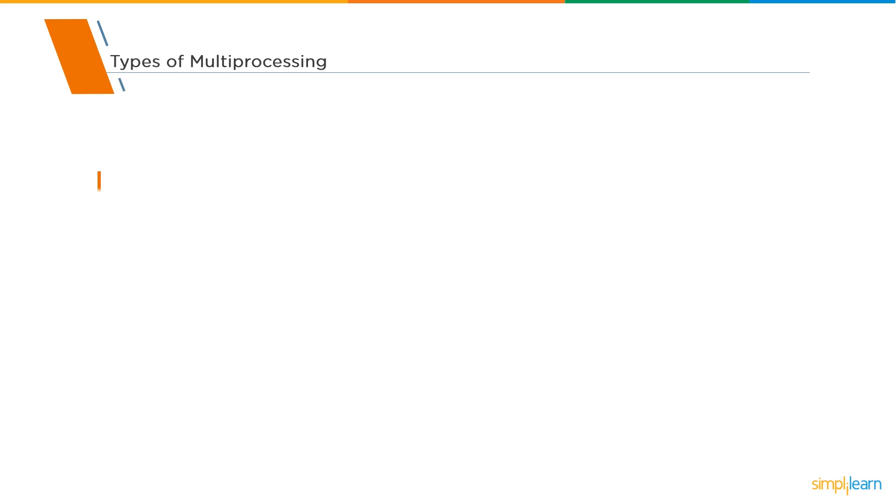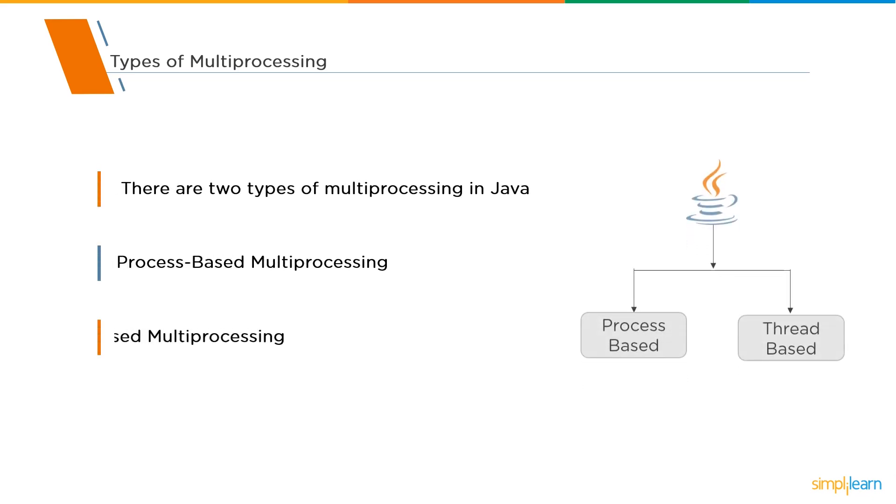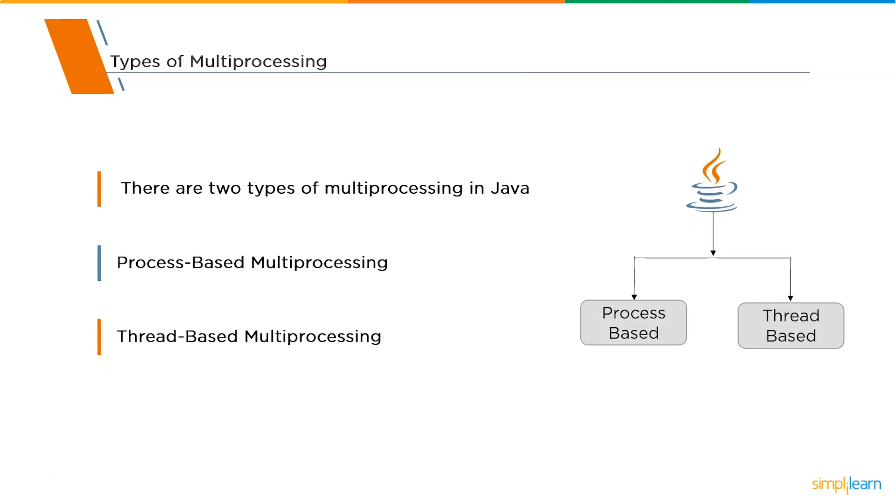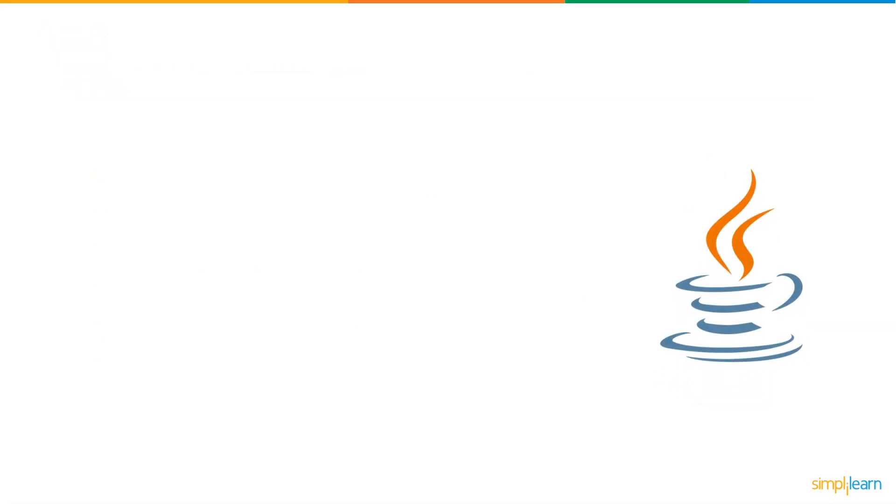Basically, there are two different types of multi-processing. The first one is process-based multi-processing and the second one is thread-based multi-processing. Our point of discussion is the thread-based multi-processing.